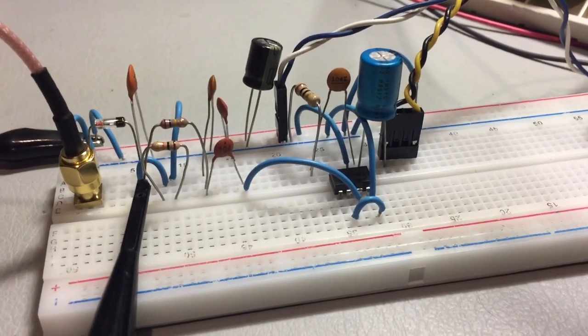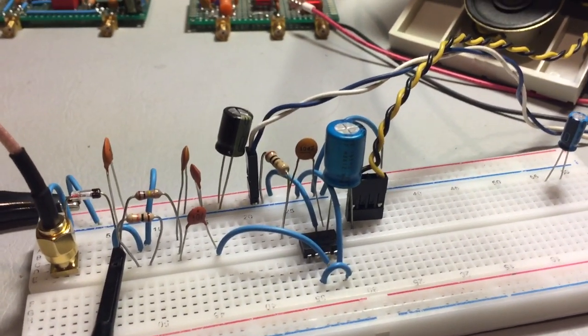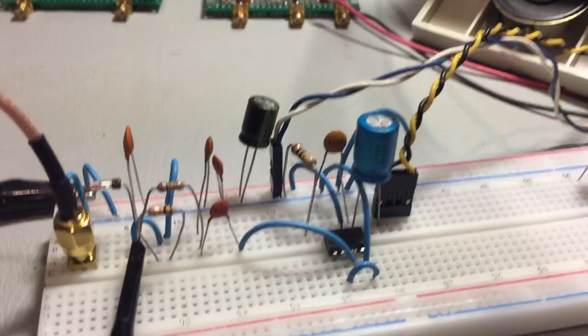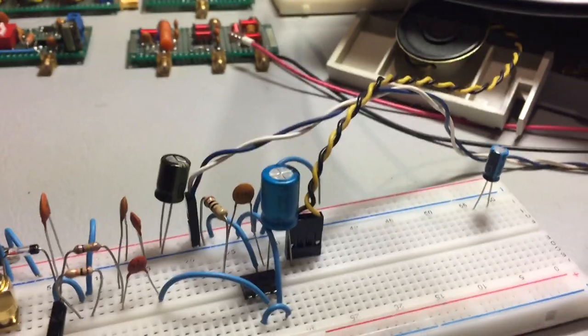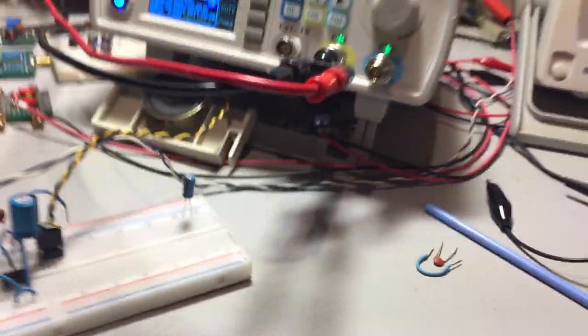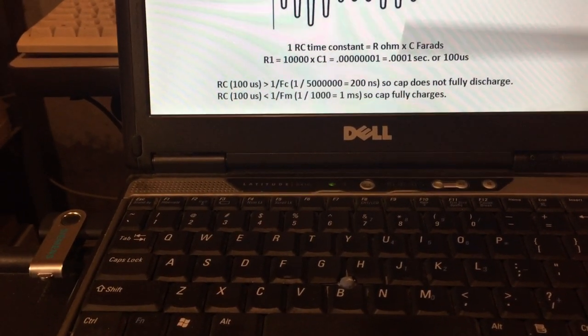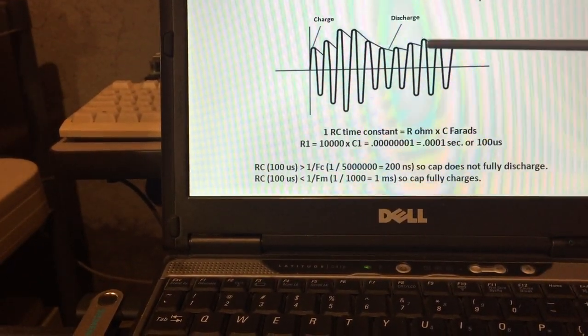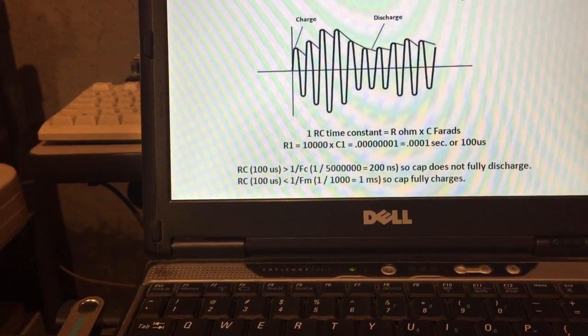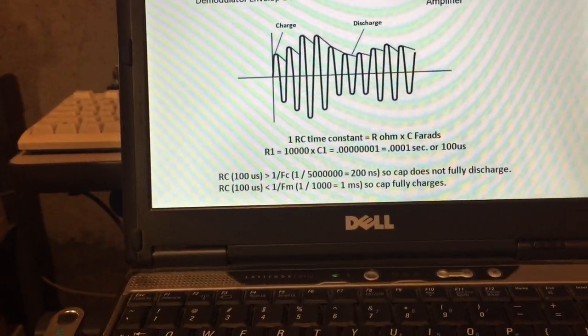So that's the demonstration. Again the critical part here would be the RC time constant that's used and to make sure that you meet the criteria that I had defined on the slide here. As long as you're within that window then you will capture the edge of the envelope and you'll replicate the original audio signal and have a very clean sine wave to drive your audio amplifier.